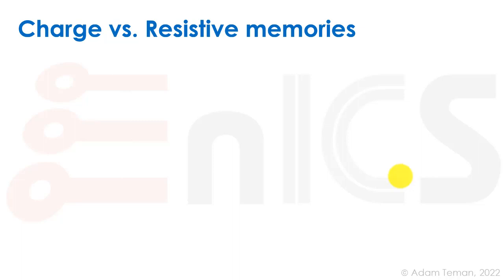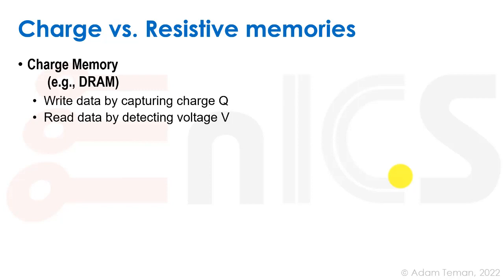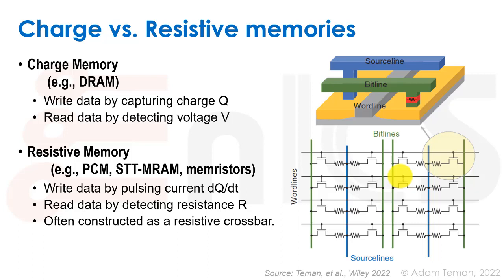I want to go over charge-based versus resistive memories. Traditional memories like DRAM are charge-based: we write data by capturing charge Q onto a capacitor and store it there, then read it out by detecting the voltage change. A resistive-based memory works differently: we write data by applying fields — a current pulse or something like that through an element — and that stores the data as a resistance. We read the data by detecting that resistance, often using a resistive crossbar.